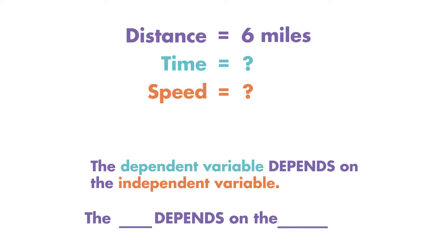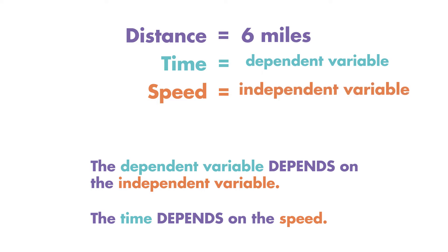For our variables, speed and time, the time it takes to complete the hike depends on Alex's speed. Because time depends on speed, time is our dependent variable and speed is our independent variable.